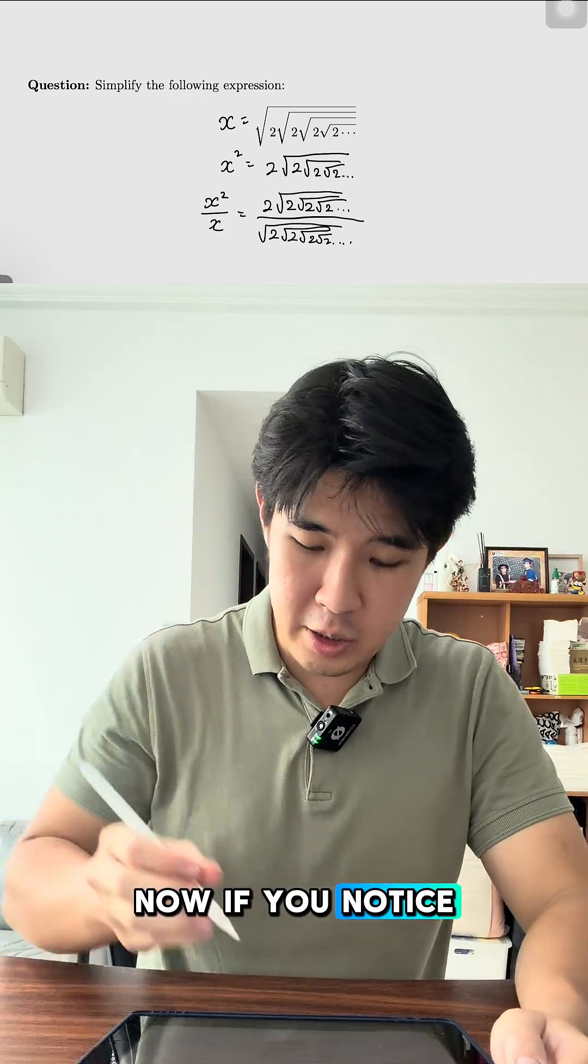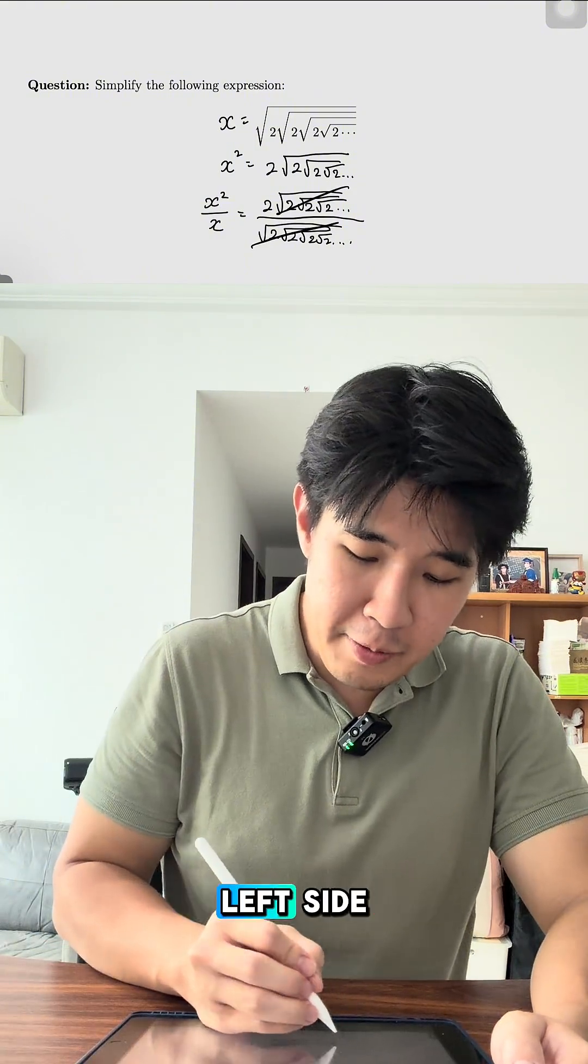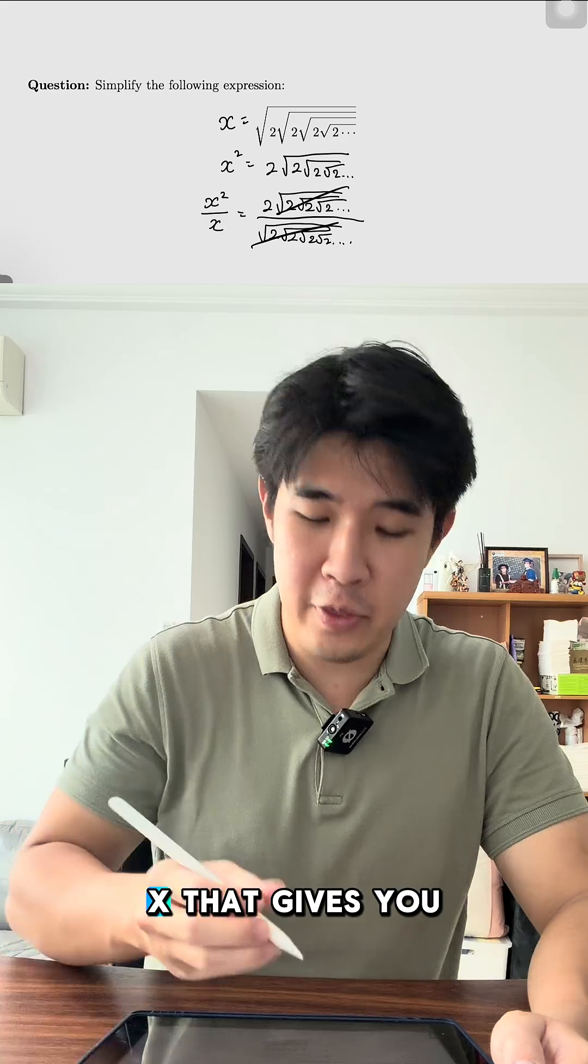Now, if you notice, we can actually take out the infinite square roots and then on the left side, x squared divided by x, that gives you x.